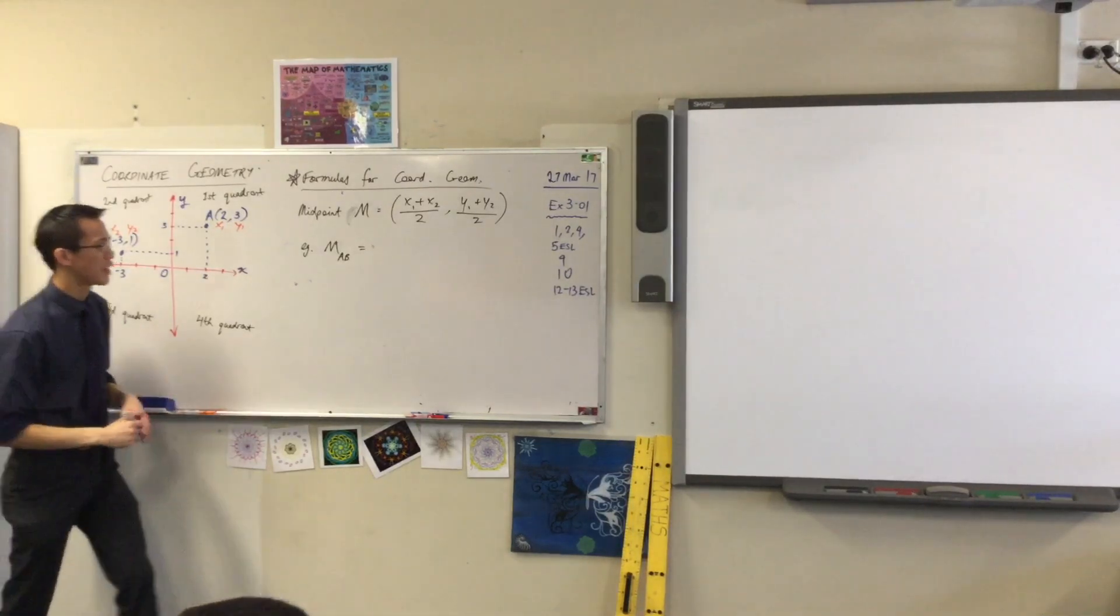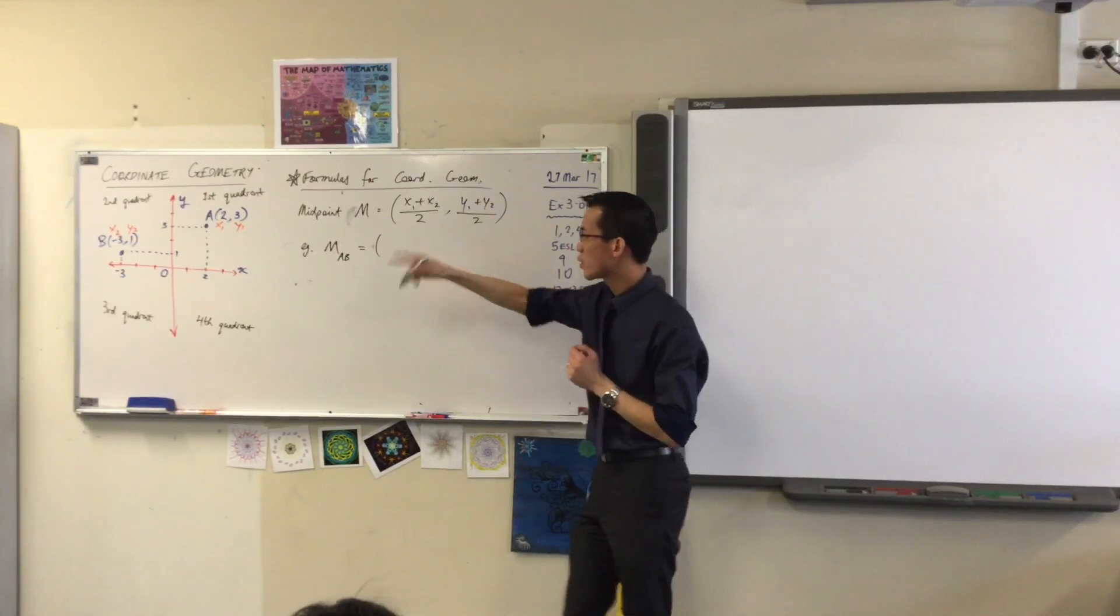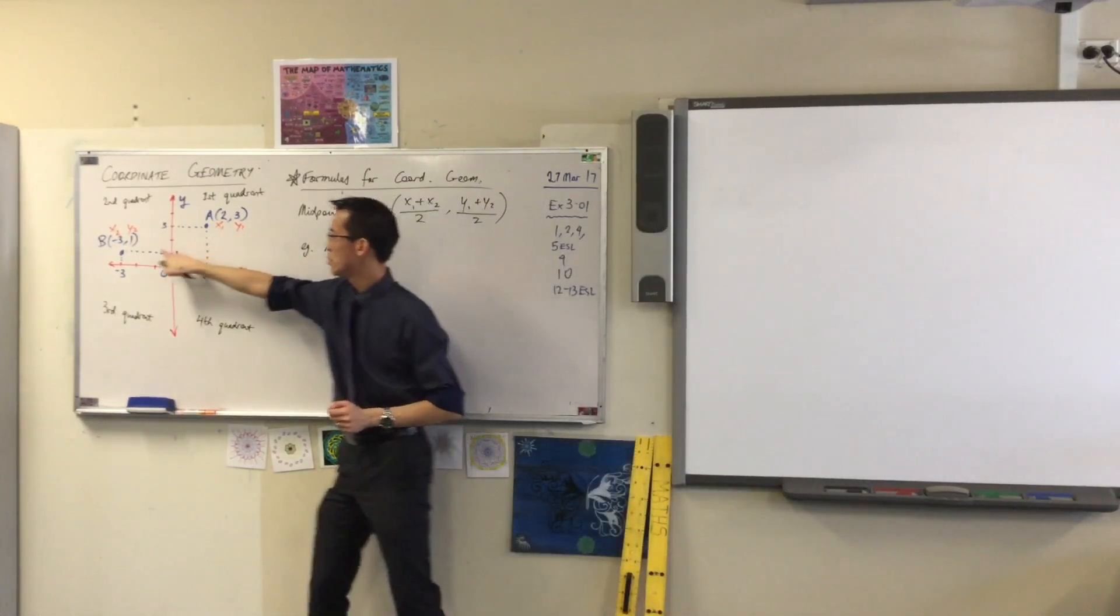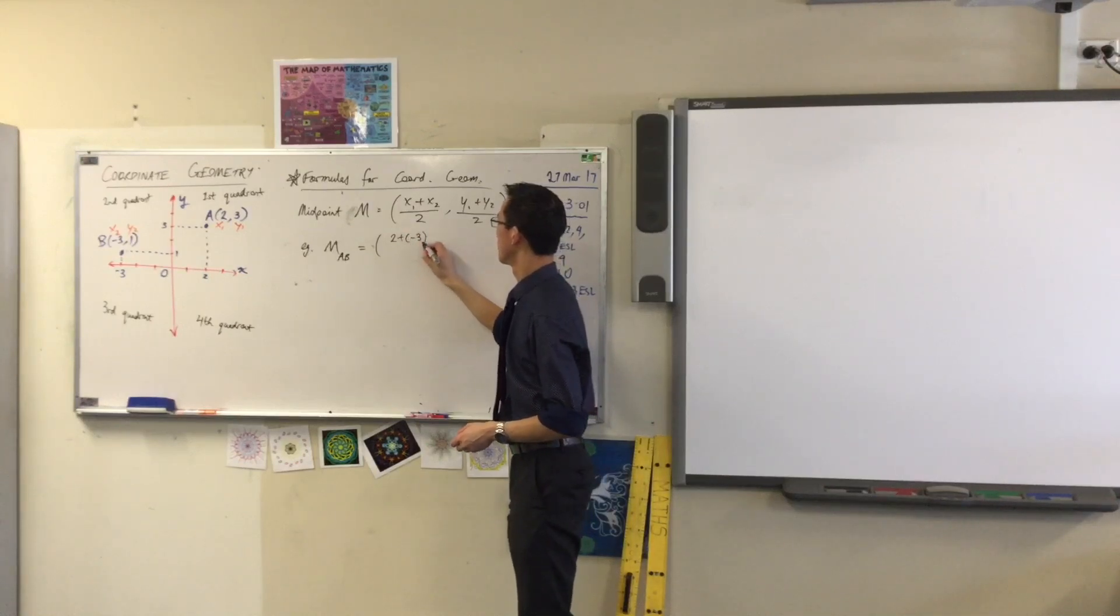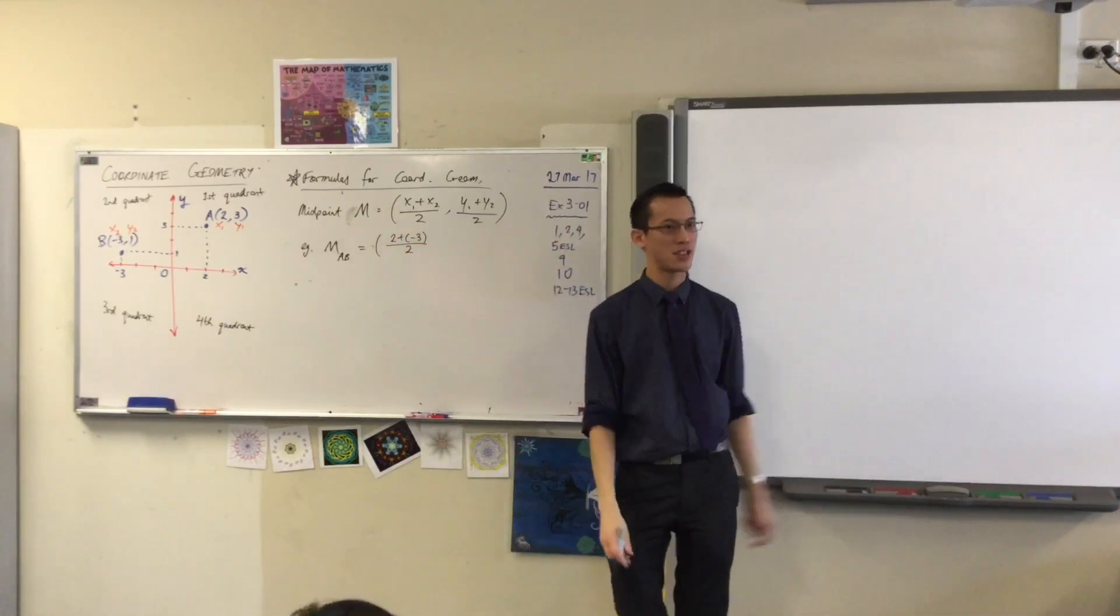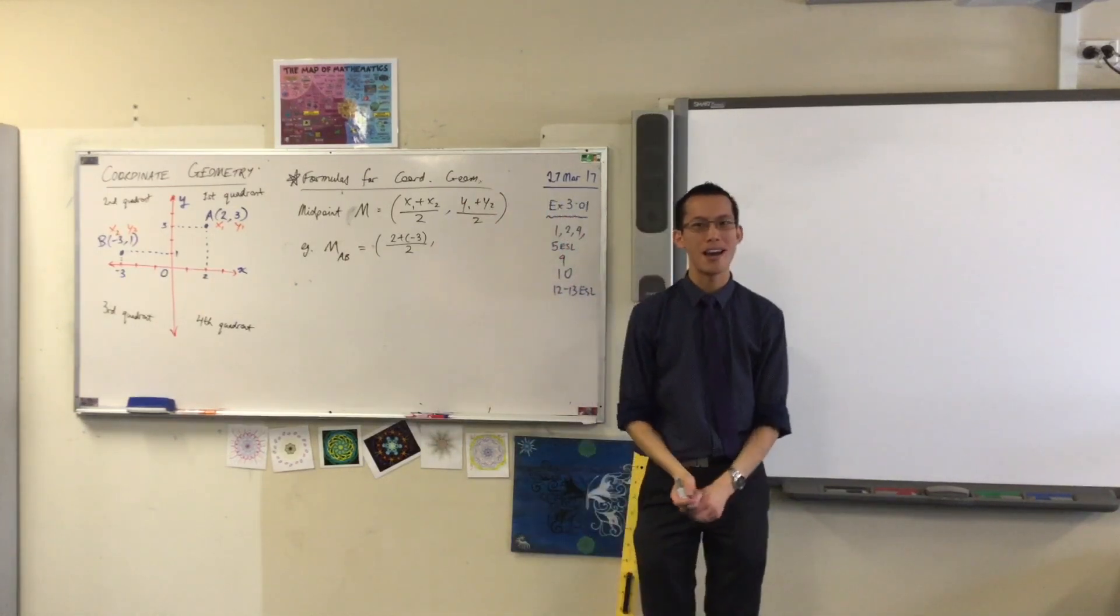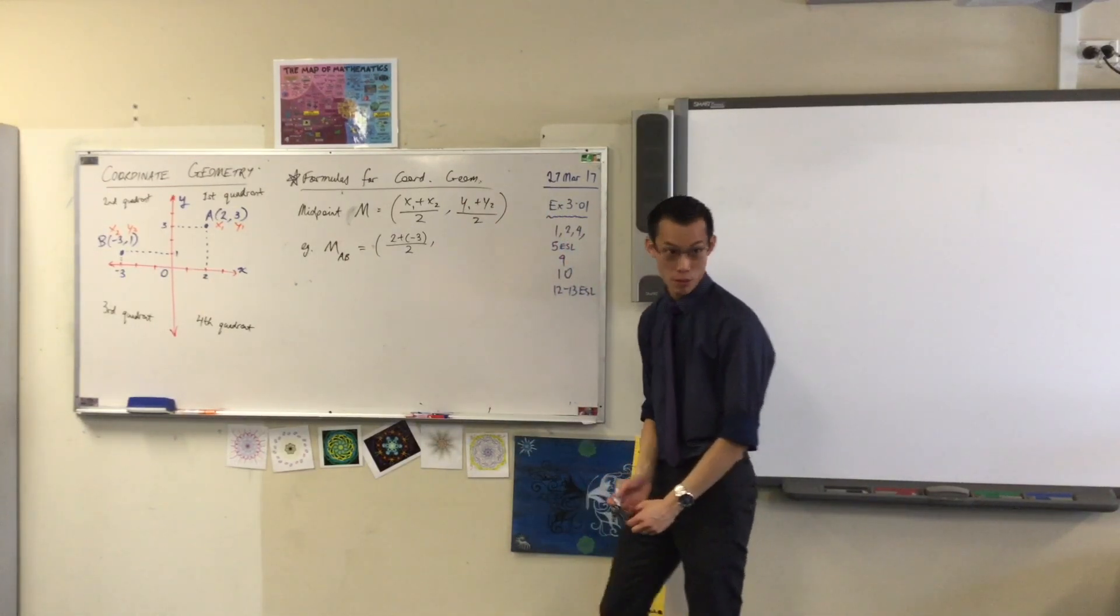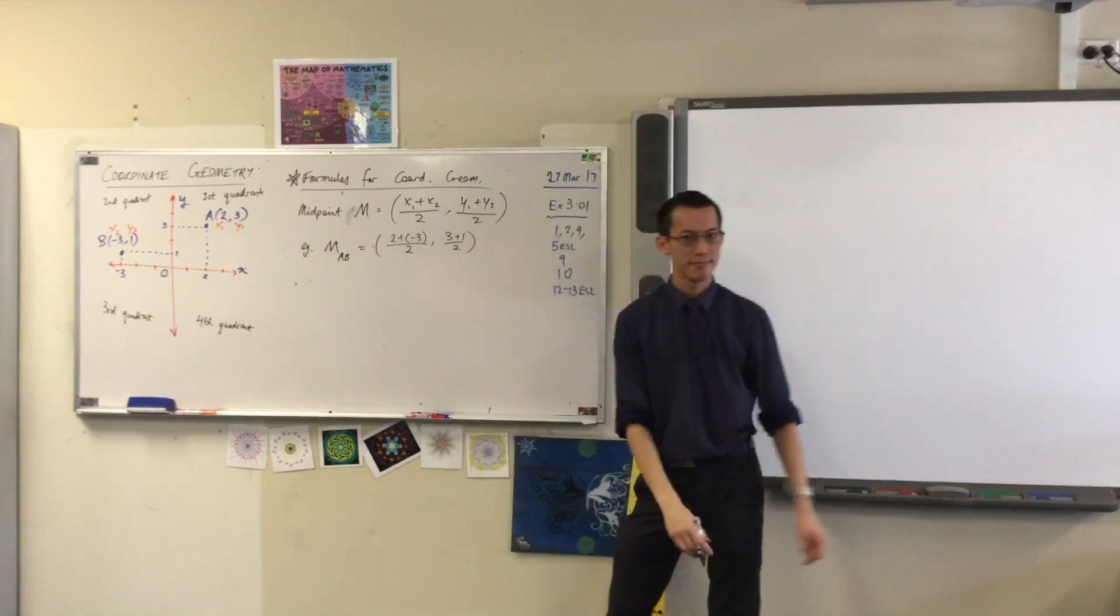Right. Let's crunch it and see what happens. So we'll do the x's first. x1 plus x2. There's 2 and there's negative 3. So 2 plus negative 3 and then I divide by 2. There's the x's. What am I going to put in for the y's? 3 plus 1 over 2.